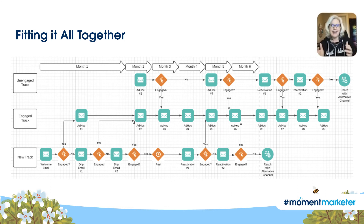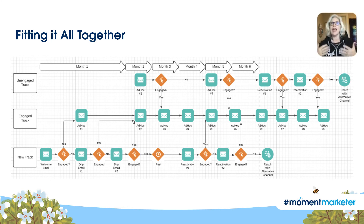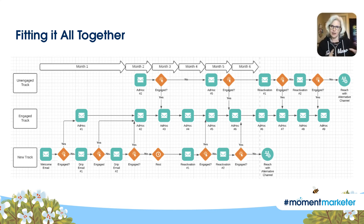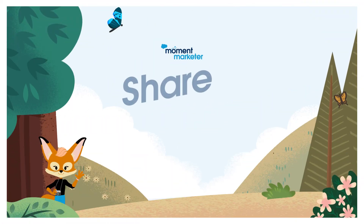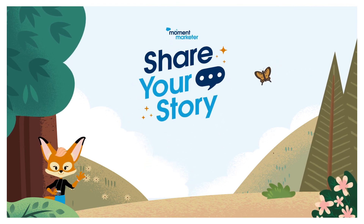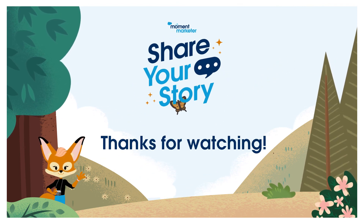I hope you found this high-level overview interesting and informative as to how you can seed unengaged people into active campaigns. Ultimately, it creates essentially a de facto re-engagement campaign without actively having a re-engagement campaign, because you're constantly keeping top of mind even as you're slowing down the cadence for the unengaged. Thank you for listening to my use case, and I hope you learned a little bit about how to address unengaged people in your email list. Thank you.